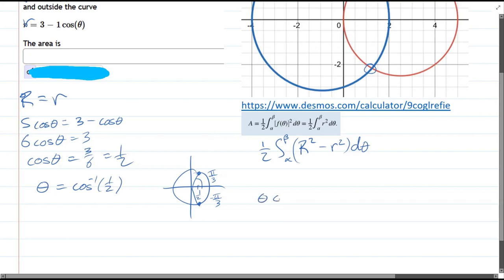Is theta going from negative pi over 3 to positive pi over 3? Or from positive pi over 3 to the other name of this angle, 5 pi over 3? I have to decide which.